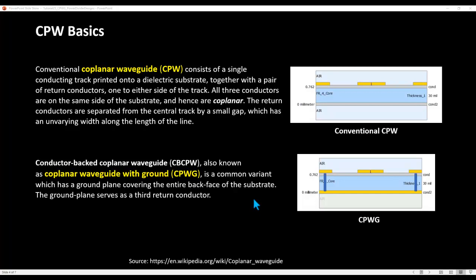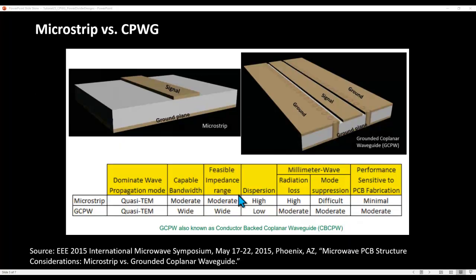CPWG is especially preferred at millimeter-wave frequency ranges. Comparing microstrip and CPWG, both technologies have their pros and cons. CPWG is preferred for high-frequency circuits because it has comparatively less radiation loss than microstrip, and the mode separation is more moderate. In terms of bandwidth, CPWG-based structures have the capability to achieve wider bandwidth compared to microstrip. However, microstrip performance is less sensitive to PCB fabrication tolerances, whereas with CPWG you need to be more careful about those tolerances.